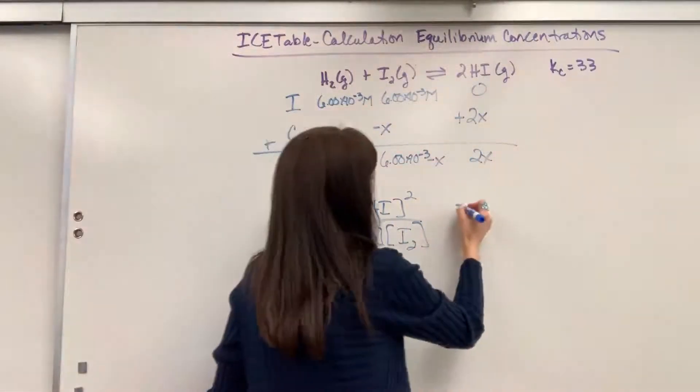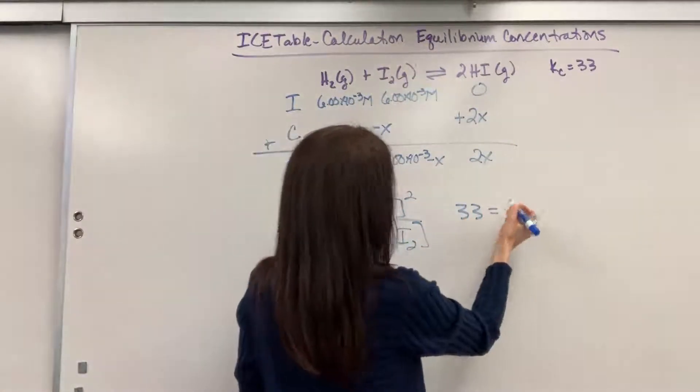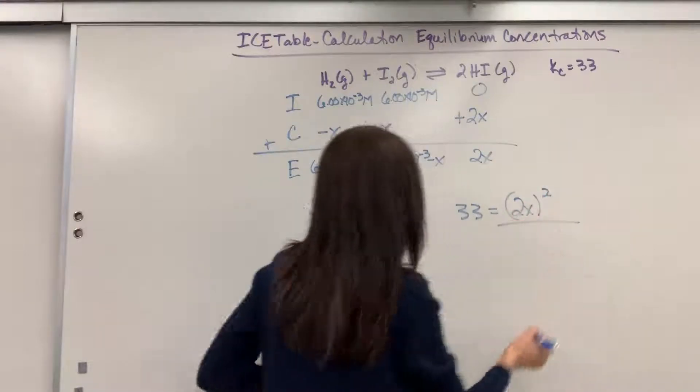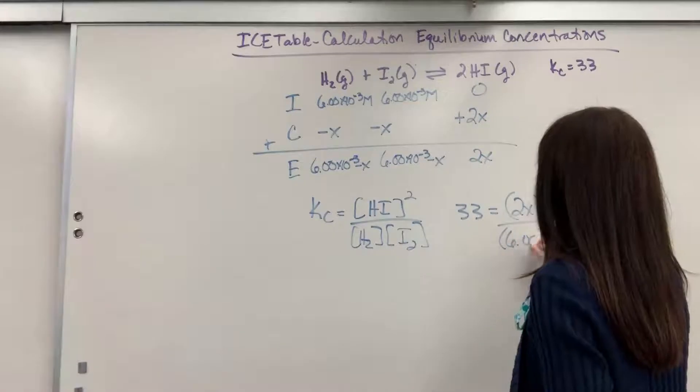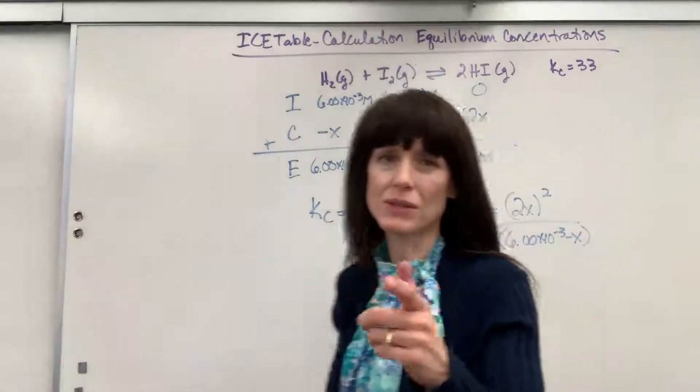now we can plug in. We're going to get 33, that's my K value, equals 2X squared divided by, and let's plug this in, 6.0 times 10 to the minus 3 minus X. Now I'm going to do something here.